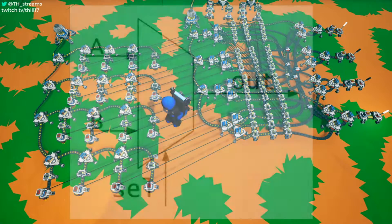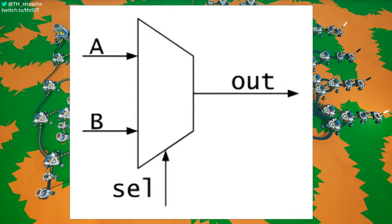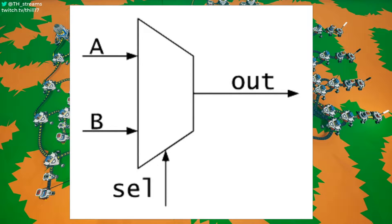On the screen we have an image coming up of a multiplexer, a circuitry diagram of it, where we have two inputs, A and B, coming in from the left, an input coming in from the bottom called select, or SEL, and then one output going to the right just labeled out. This is a two-to-one multiplexer, because we have two inputs, A and B, being selected between with our select, and then output whichever one that we select.